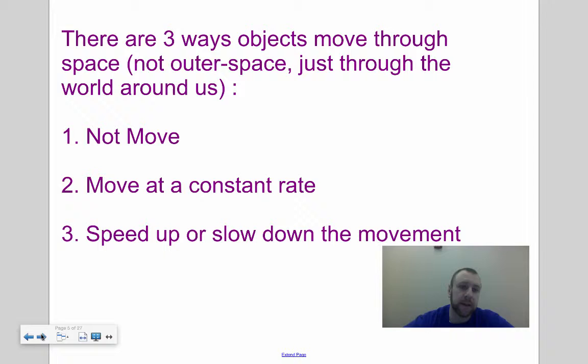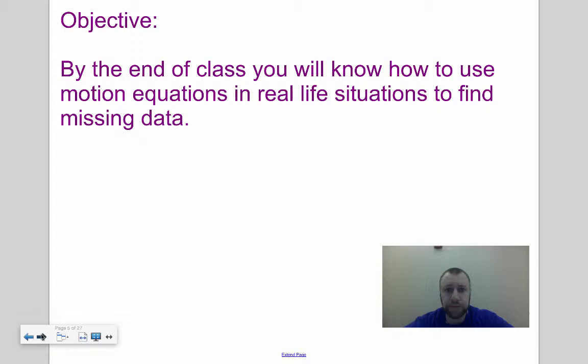If you're not moving at all, your velocity or your speed is zero. If you're moving at a constant rate, that means that your speed is the same throughout. Speed is equal to velocity through this. And if you're speeding up or slowing down, that's called acceleration. No matter what, if you're speeding up or slowing down, it's just called acceleration.